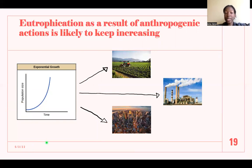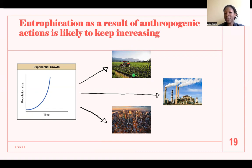Eutrophication is likely to keep increasing as a result of anthropogenic actions. Population is growing exponentially, meaning increased demand for food and therefore increased use of fertilizers. There will also be an increased need for goods and services, leading to growth in industry and factories, increased urbanization, and increased wastewater output, because more people means more consumption and more waste.